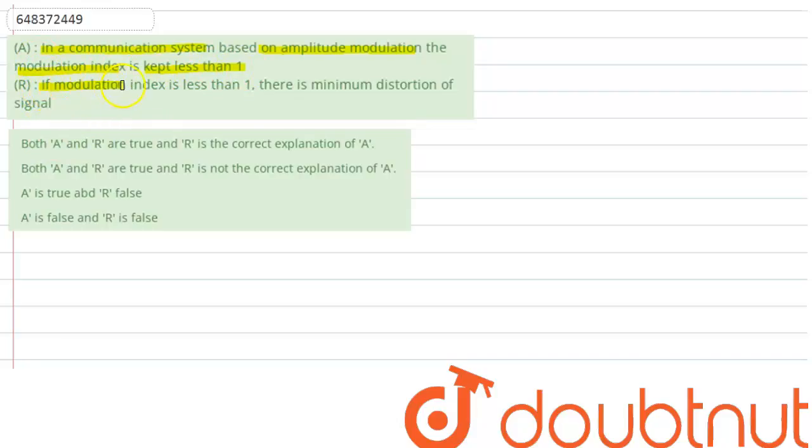For this assertion, the reason is, if modulation index is less than 1, there is minimum distortion of signal.